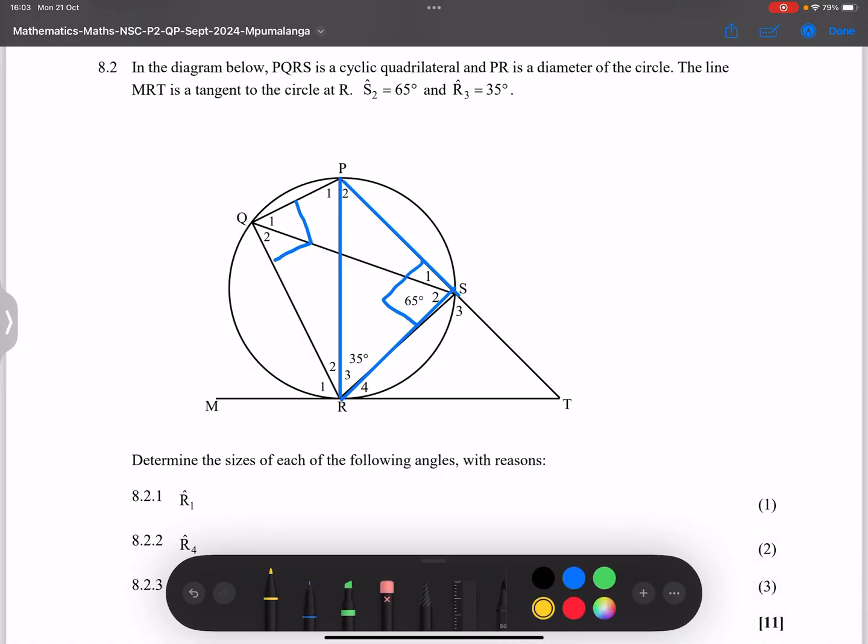So already that does tell us that Q2 must be equal to P2. That's our bow tie theorem. And it tells us also that R2 should be equal to S1. So they say the line MRT is a tangent to the circle. Beautiful. We've got a tangent. And in this case, they say we've got S2 equal to 65 and R2 equal to 35.